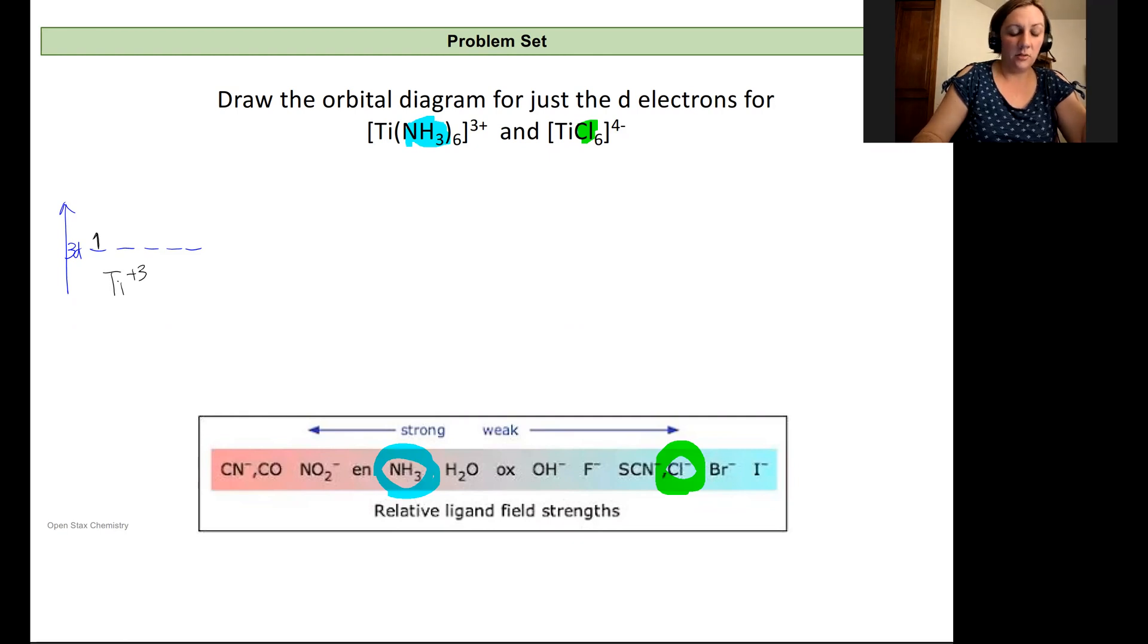So let's start with our strong field ligand, our NH3. And so these are going to split. And since it's an octahedral complex, which we know because we have six of each of our ligands that are going to arrange around this titanium ion, we'll have our titanium ion.